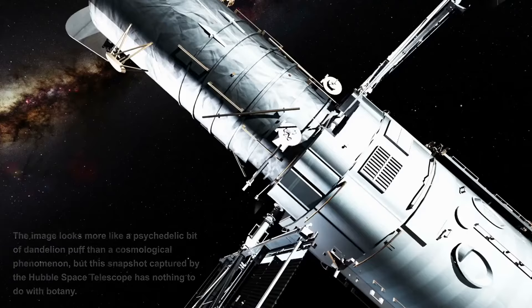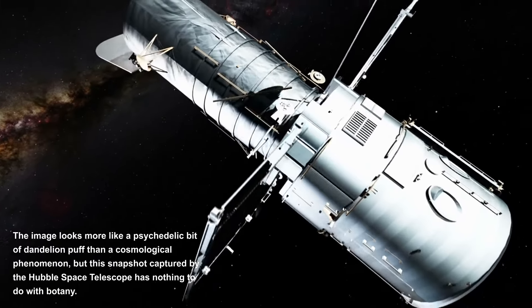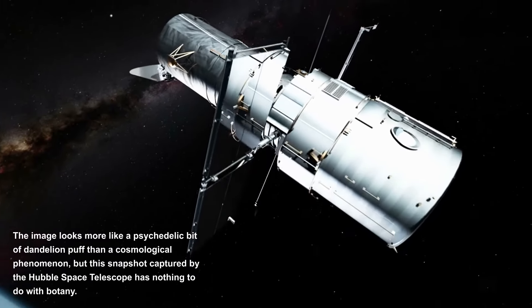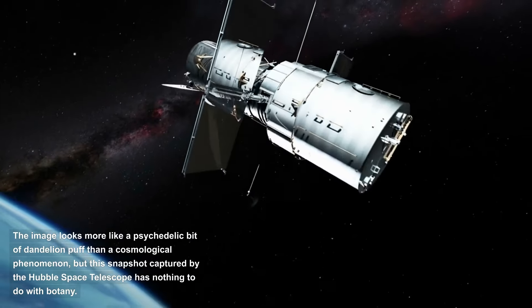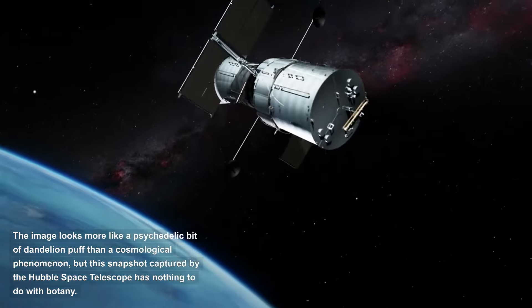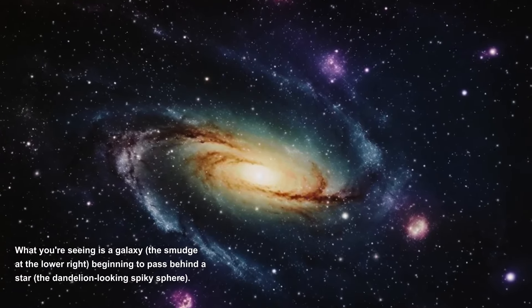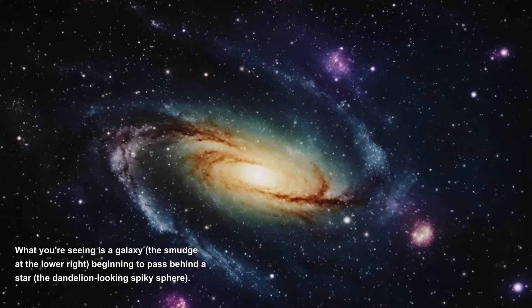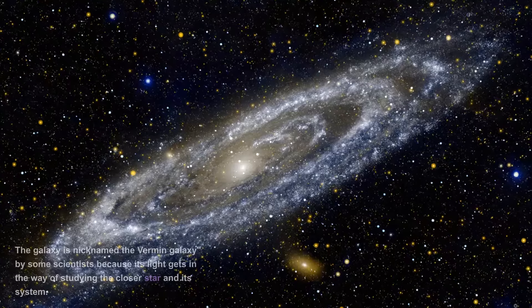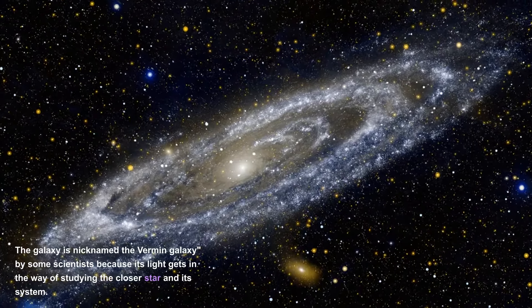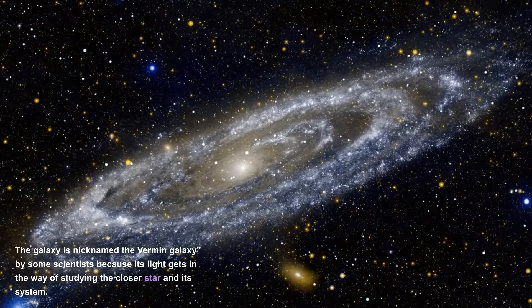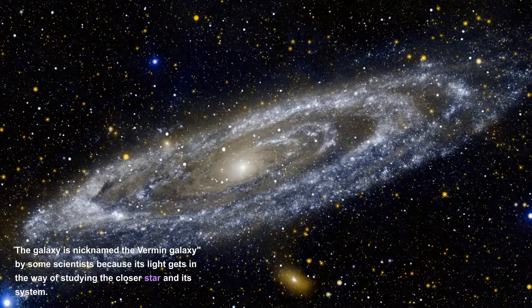Cosmic Vermin. The image looks more like a psychedelic bit of dandelion puff than a cosmological phenomenon, but this snapshot captured by the Hubble Space Telescope has nothing to do with botany. What you're seeing is a galaxy, the smudge at the lower right, beginning to pass behind a star, the dandelion-looking spiky sphere. The galaxy is nicknamed the Vermin Galaxy by some scientists because its light gets in the way of studying the closer star in its system.